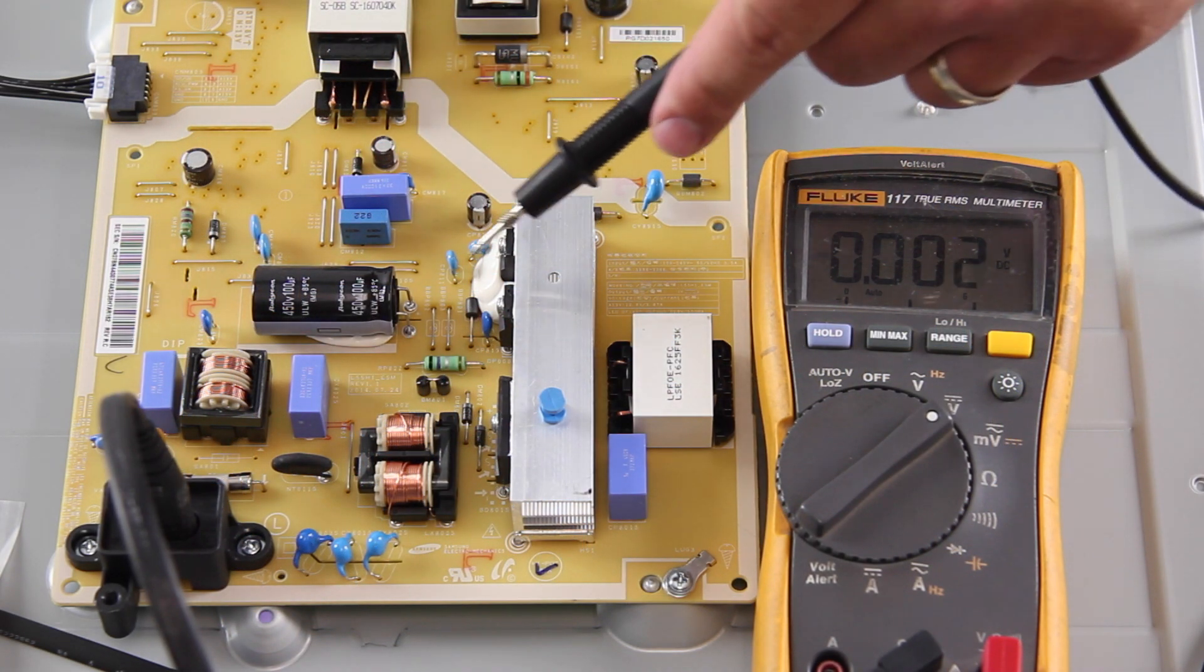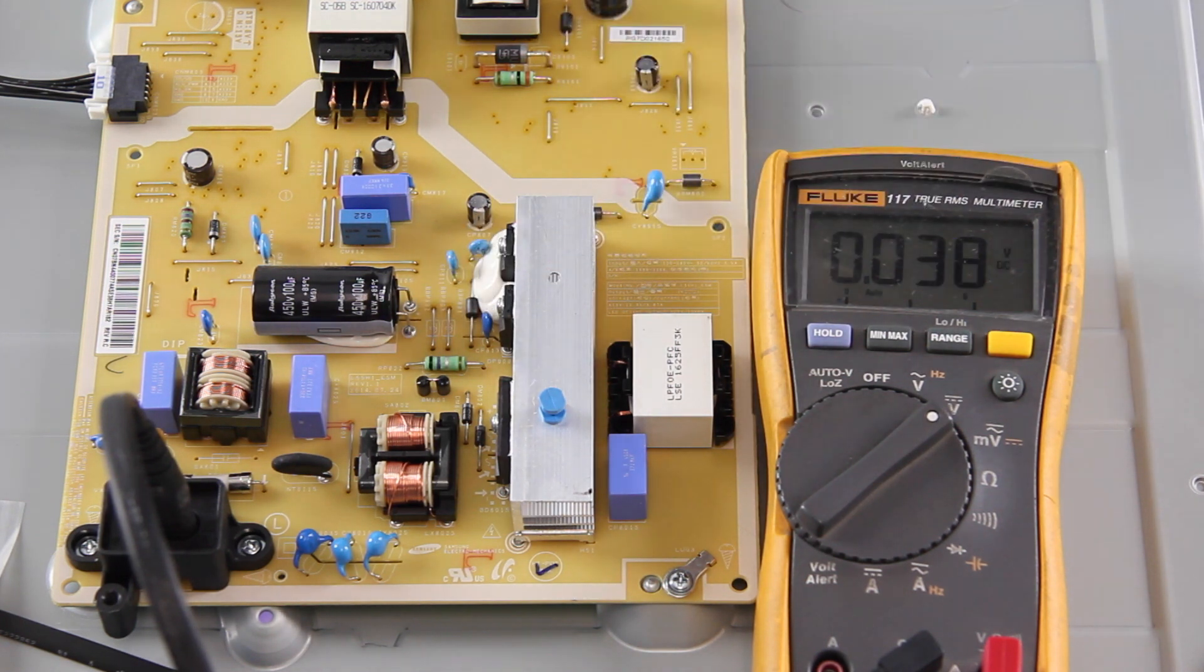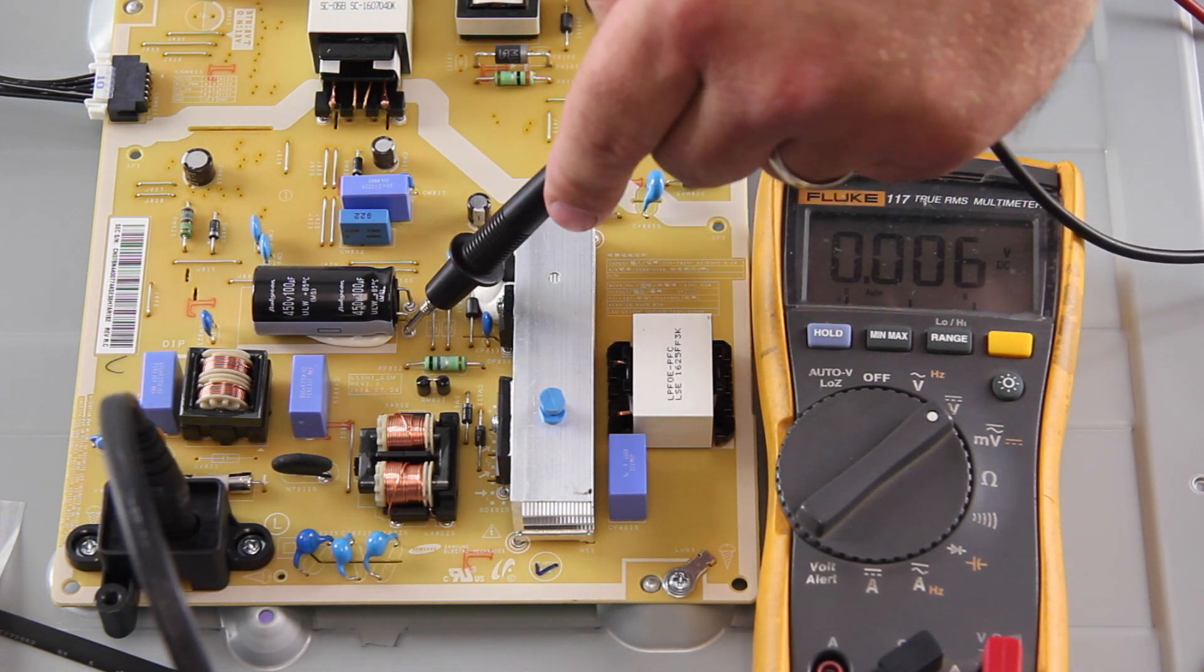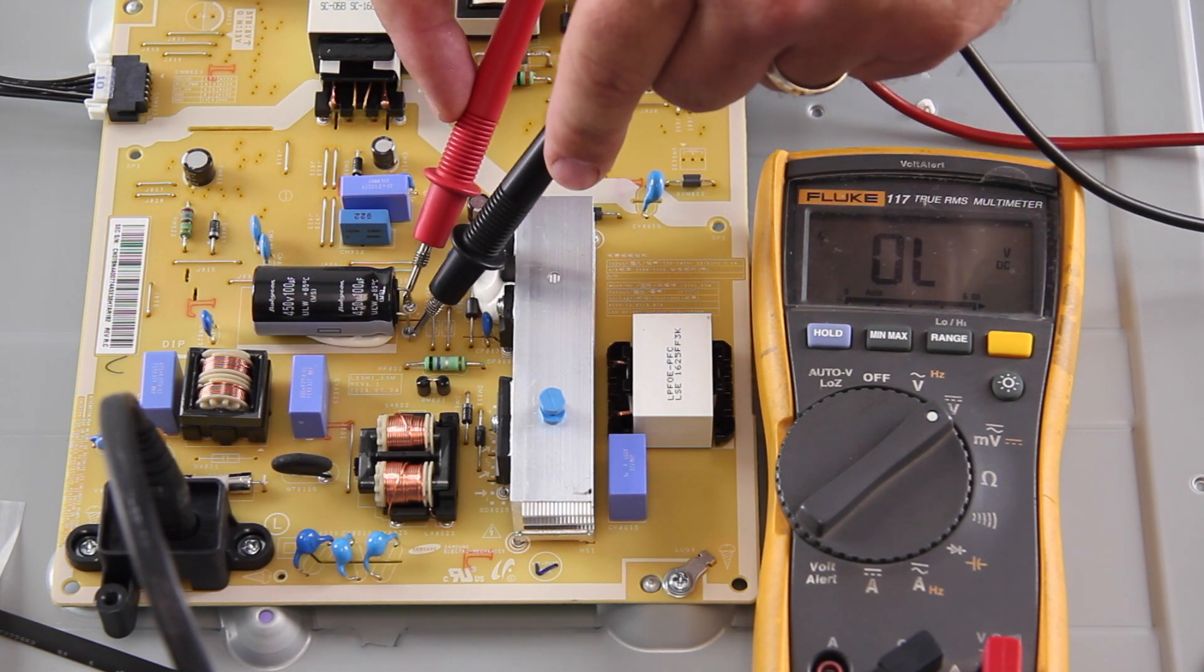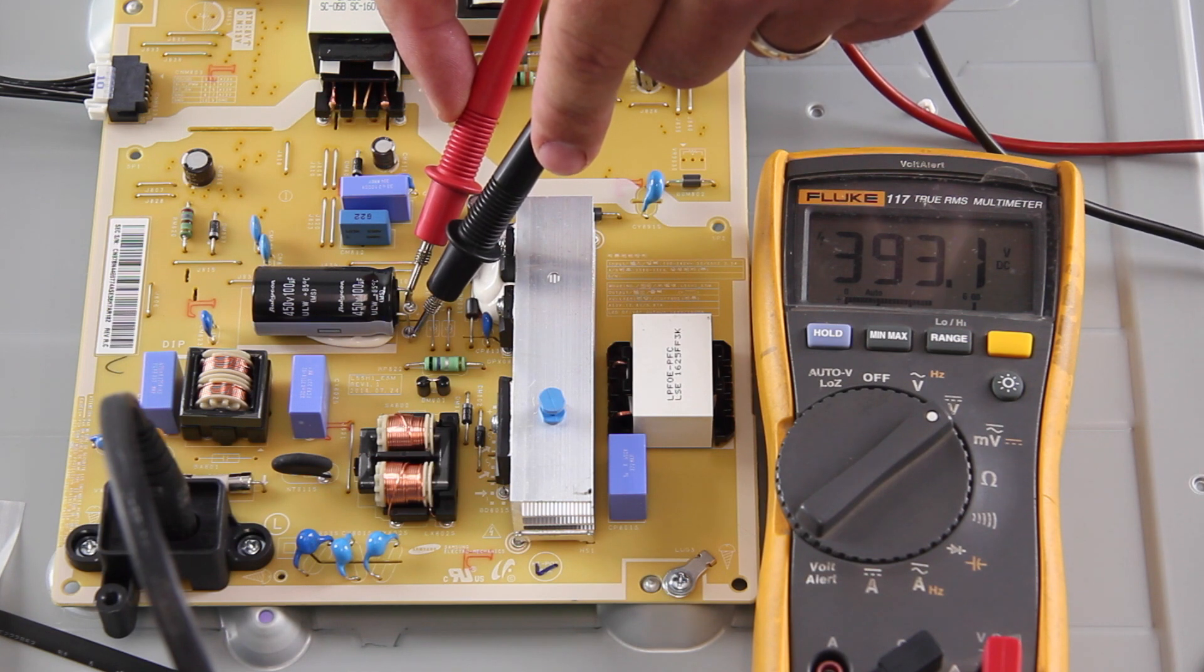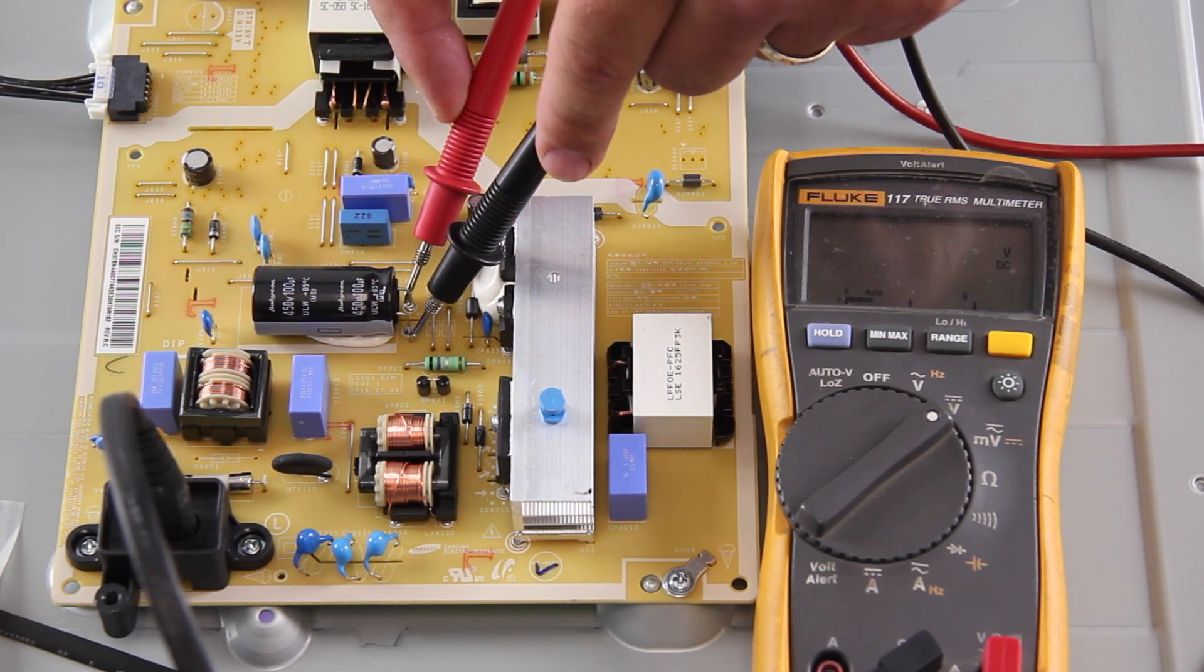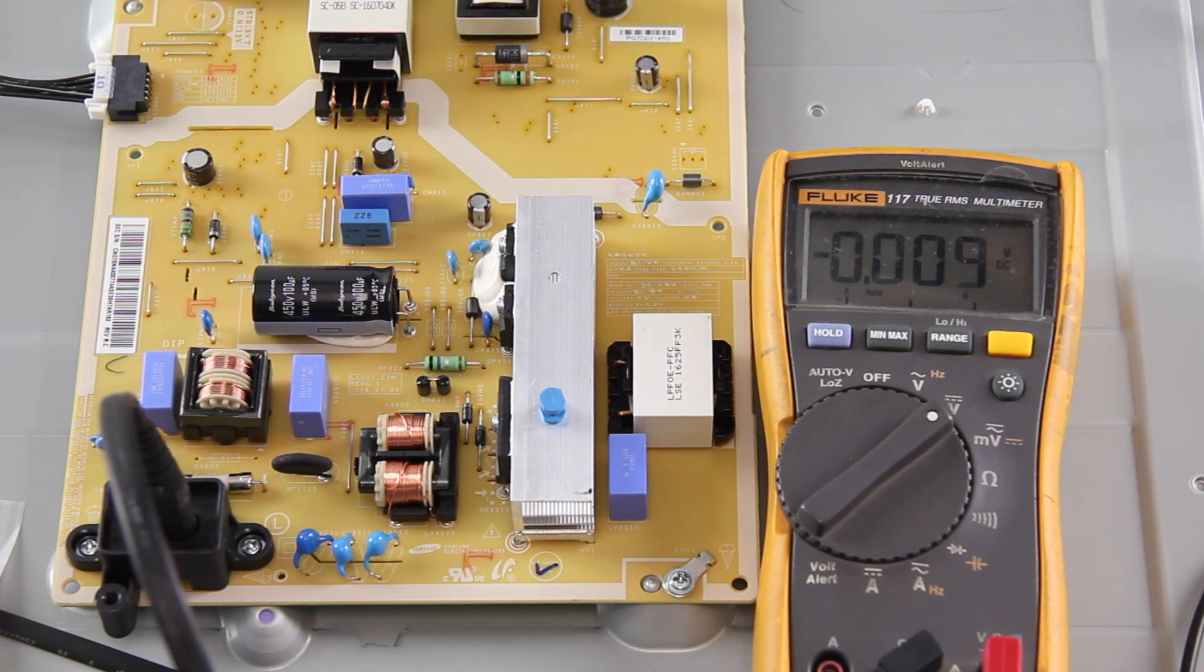When testing a voltage on the hot side, put the positive test lead on the pin you are testing and then put the ground lead on either the negative side or on a heat sink on the hot side. We are showing this example while testing this capacitor with the ground lead on the negative side of the cap and on the heat sink. Both show the same result.